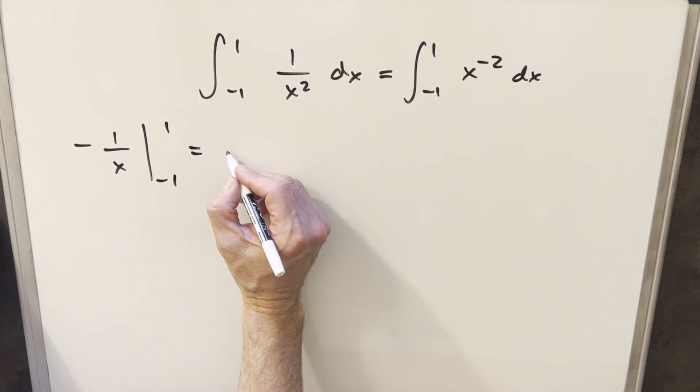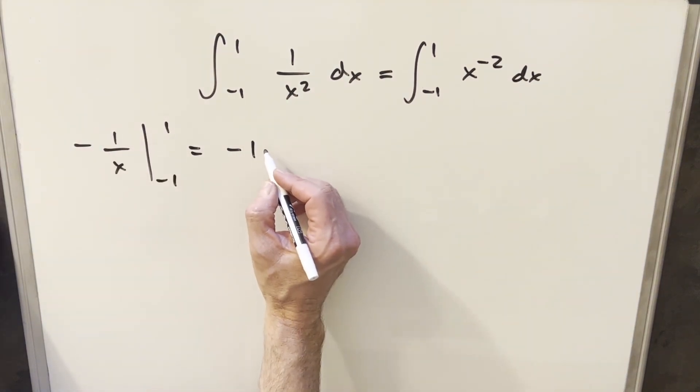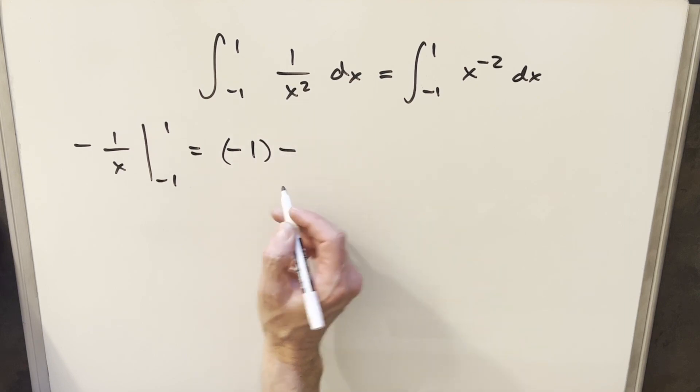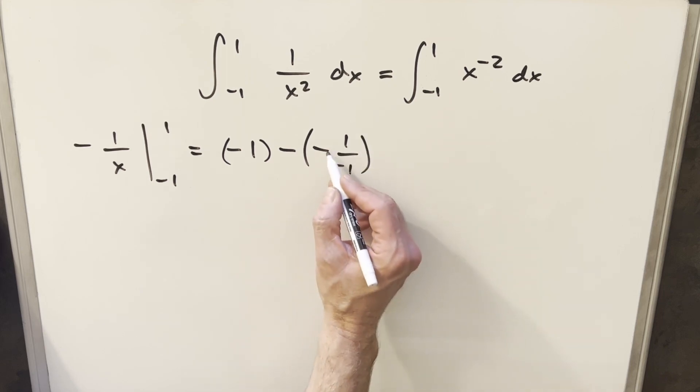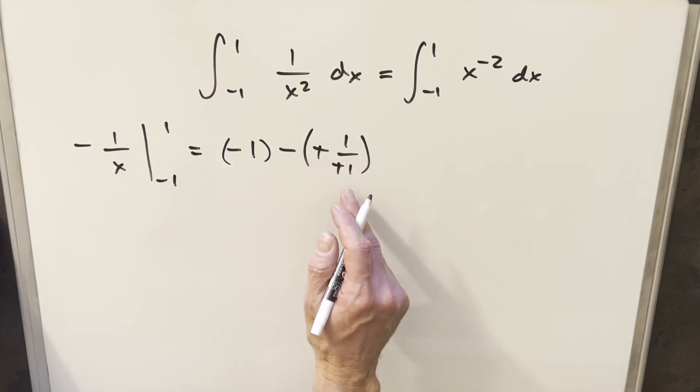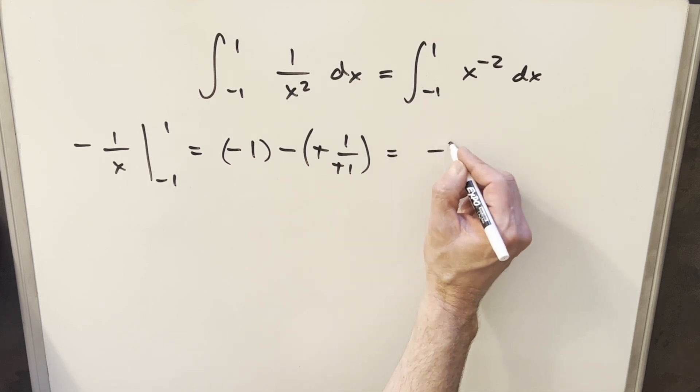So we plug in here and we're going to get, for the first term plugging in 1, we have a minus 1. Then for the second term, we plug in, let's do this kind of carefully. So we have a minus 1 over minus 1. The negative signs cancel. So we just have minus 1, minus 1, minus 2.